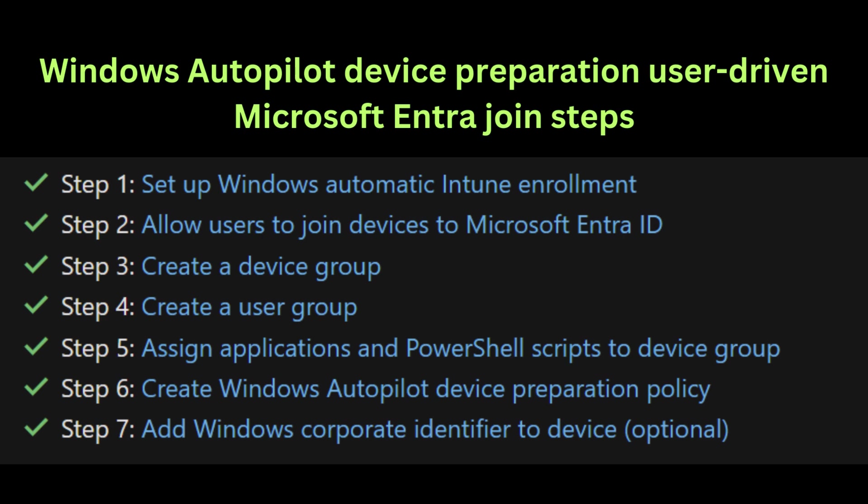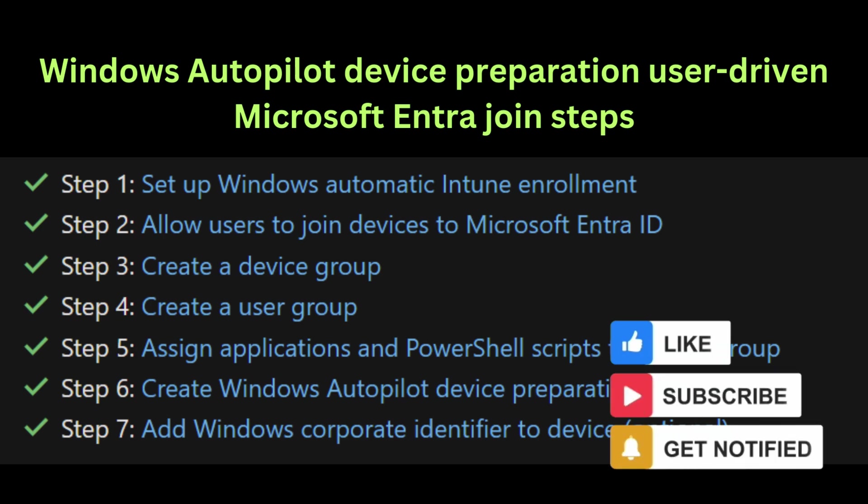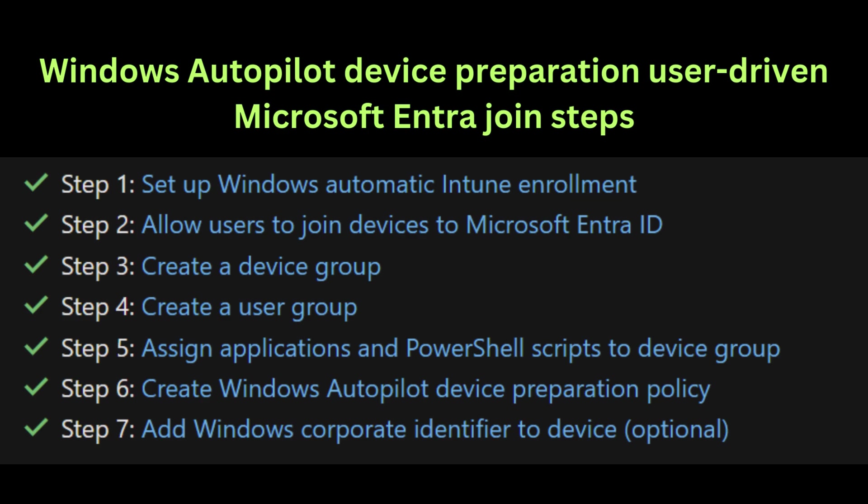Before switching to the setup and configuration steps, let's review the steps needed for a user-driven Microsoft Entra ID join. First, set up Windows Automatic Intune enrollment. Second, allow the user to join the device to Microsoft Entra ID. Third, create a device group. Fourth, create a user group. Fifth, assign the required applications and PowerShell scripts to the device group. Sixth, create a Windows Autopilot device preparation policy. And optionally, add a Windows Corporate Identifier to the device.